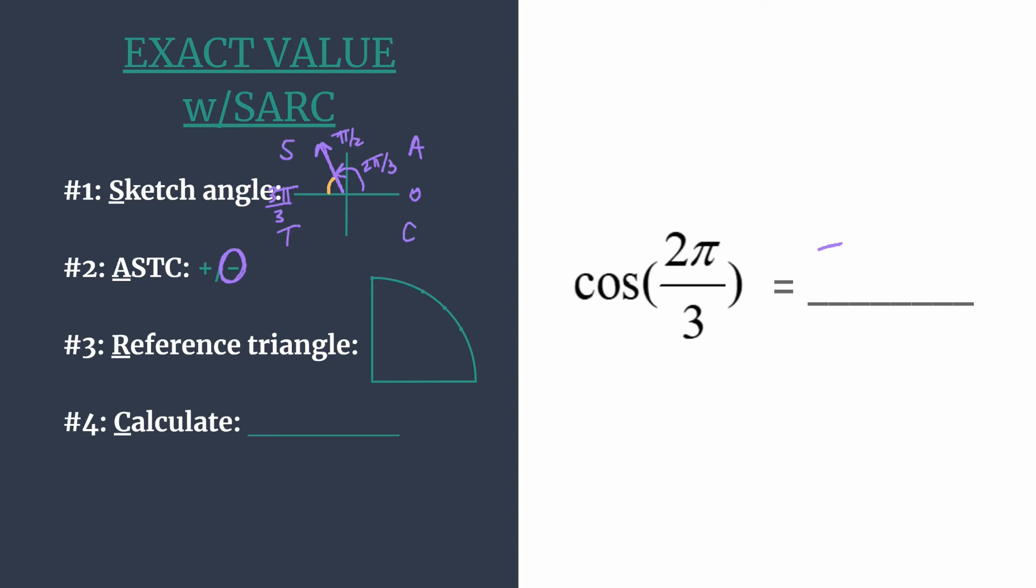So that's here. So to get from 2π/3 to 3π/3 must be π/3. Okay, and that's the same thing as 60 degrees. So our reference triangle is that 60-30-90 triangle.